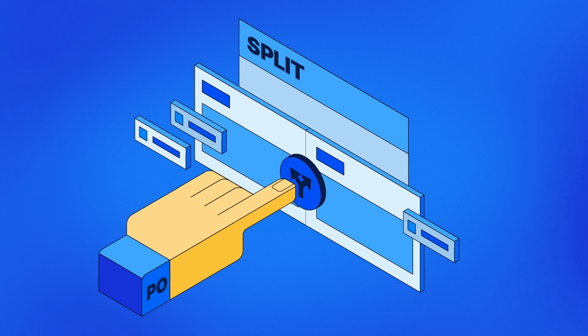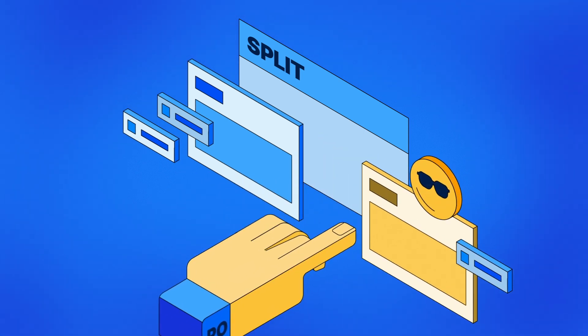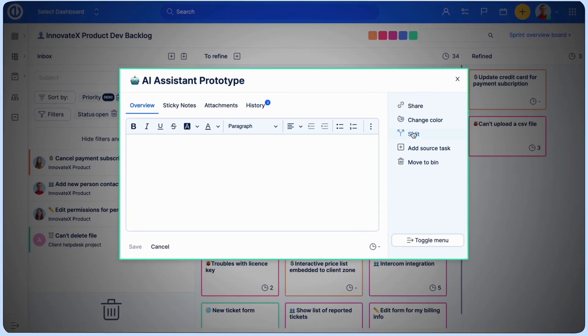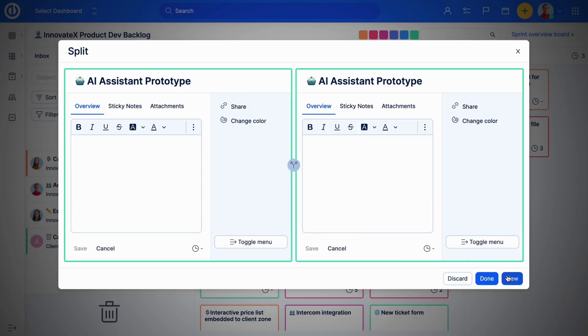Scrum boards in Easy Redmine 13 make working with product backlog items as easy as possible. With features like split, you can break down work quickly. For clarity, give PBIs color coding or emojis to help you navigate them.